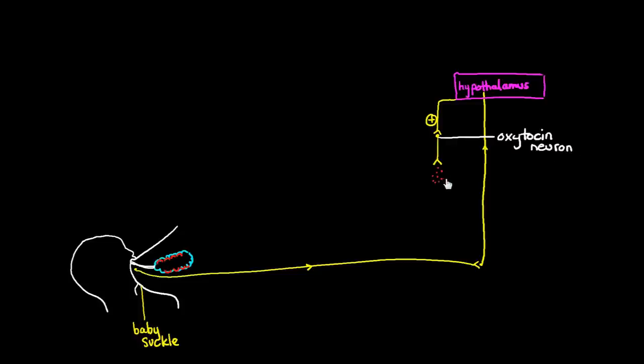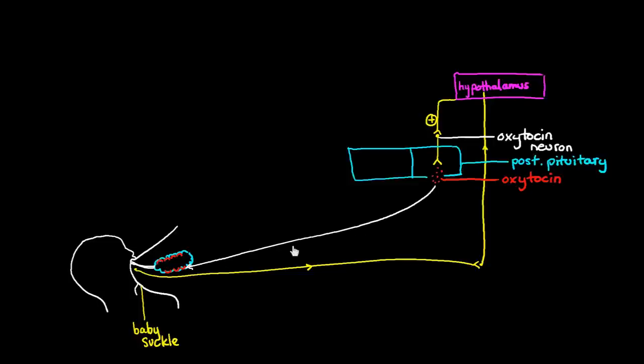So the oxytocin neuron is secreting oxytocin, and it's secreting that hormone from the posterior part of another segment in the mother's brain, and that segment is called the pituitary gland. The oxytocin is being released from the posterior pituitary in the mother, and the function of that oxytocin hormone is to cause these myoepithelial cells to contract.